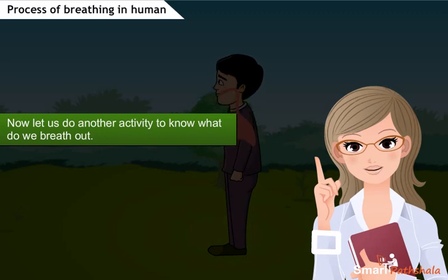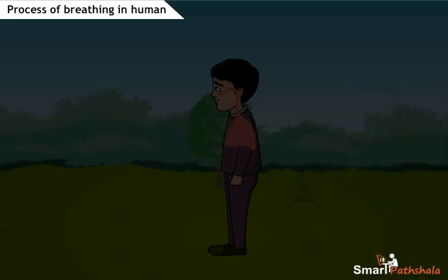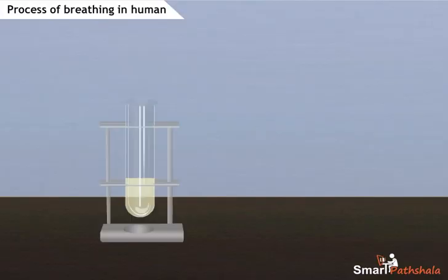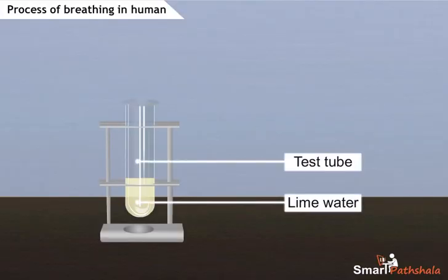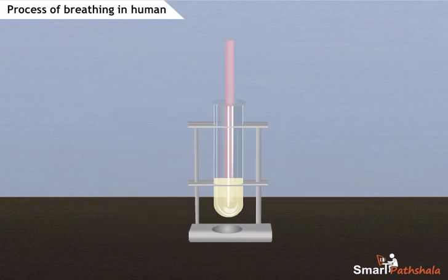Now, let us do an activity to know what we breathe out. Take a clean test tube and pour some freshly prepared lime water into it. Insert a plastic straw into the test tube in such a way that it dips in the lime water.